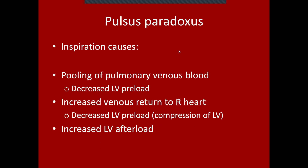Pulsus paradoxus relates to the respiratory cycle. During the inspiratory part, you see pooling of pulmonary venous blood — automatically less LV preload because the negative pressure in the chest causes less filling of the left atrium and subsequently the left ventricle, temporarily decreasing left ventricular preload during inspiration.